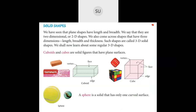Then we studied solid shapes. Plain shapes are 2D — they have only two dimensions: length and breadth. But some shapes have three dimensions: length, breadth, and thickness. Such shapes are called 3D solid shapes. Some 3D shapes are cuboids and cubes. Cuboids have rectangular faces. These surfaces are called faces, the lines are called edges, and the points where three edges meet are called vertices. Examples of cuboid are a matchbox, a Rubik's cube, or a dice.